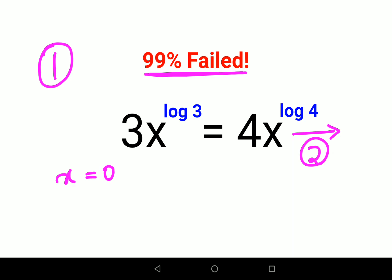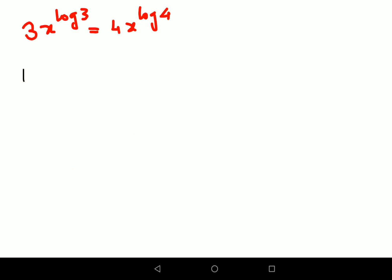Now let's understand what happens when you take log on both sides. So this is your question. Like I said, we will first take log of 3x the whole raised to log 3 equals to log of 4x the whole raised to log 4. Now first thing, we will apply the law of logarithm which says log of a raised to m is nothing but m log a.